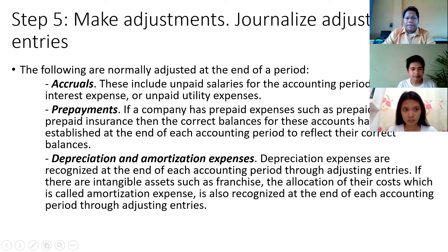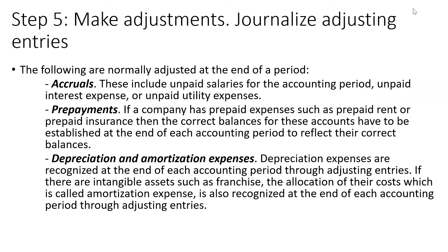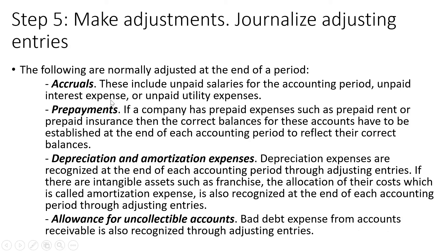These are the items to be considered in adjustments: accruals, prepayments — if you have prepaid expenses, compute how much has already been covered or used up, like prepaid insurance or prepaid rent. If prepaid rent is good for five months, after the first month you compute how much remains as an asset and how much has turned into an expense.